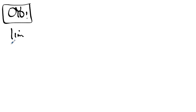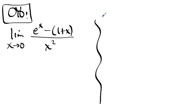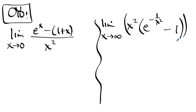One of them is the limit as x approaches zero of e to the x minus quantity one plus x over x squared. And the other is the limit as x approaches infinity of x squared times e to the negative one over x squared minus one. That limit, as a hint to you, I will tell you that one of them